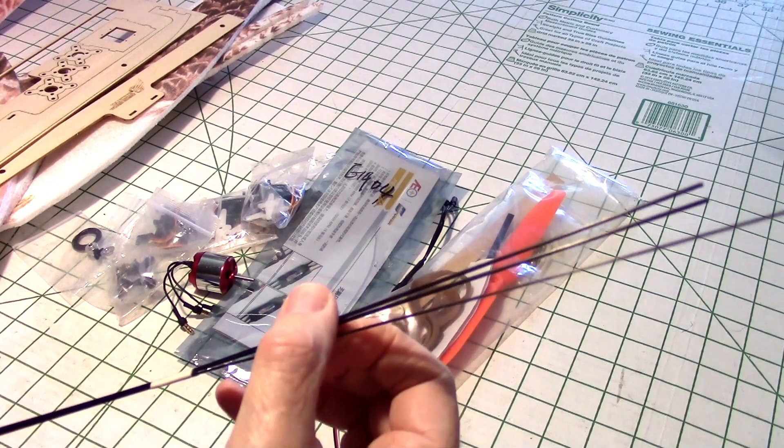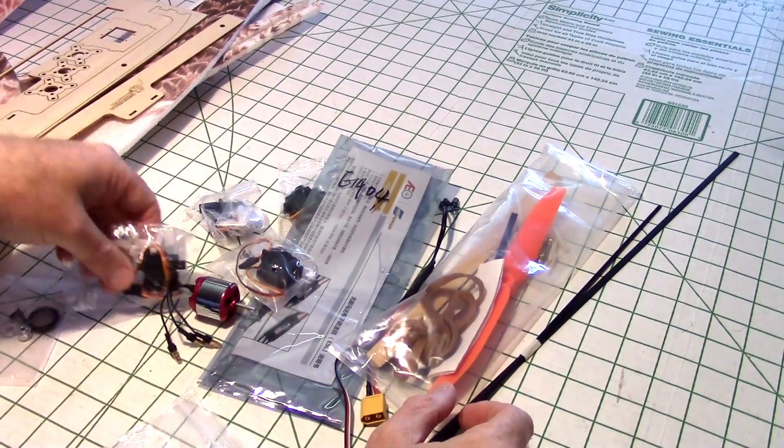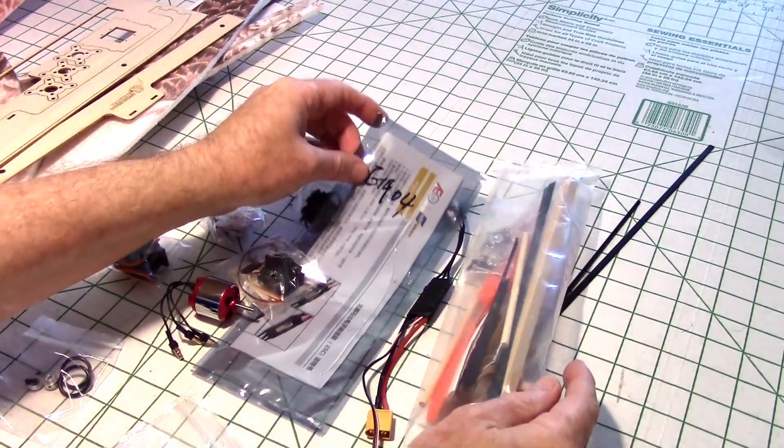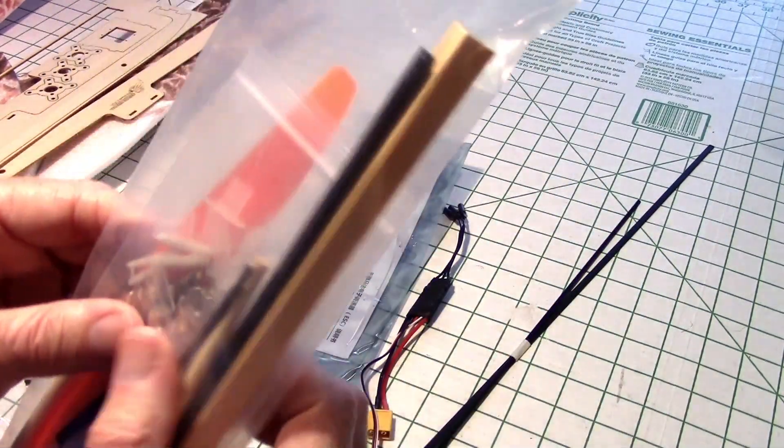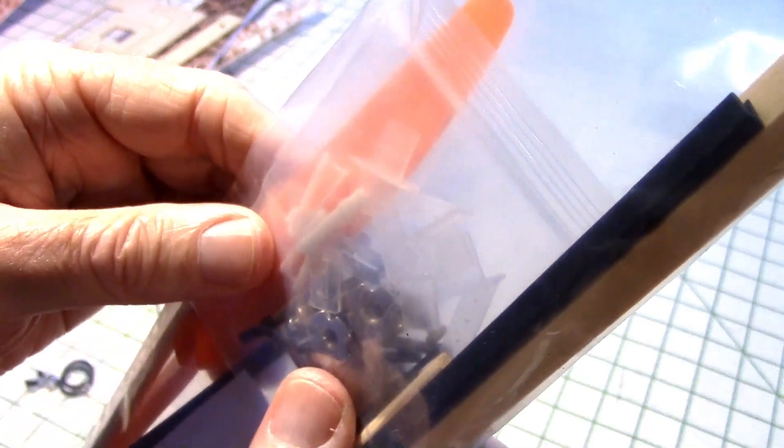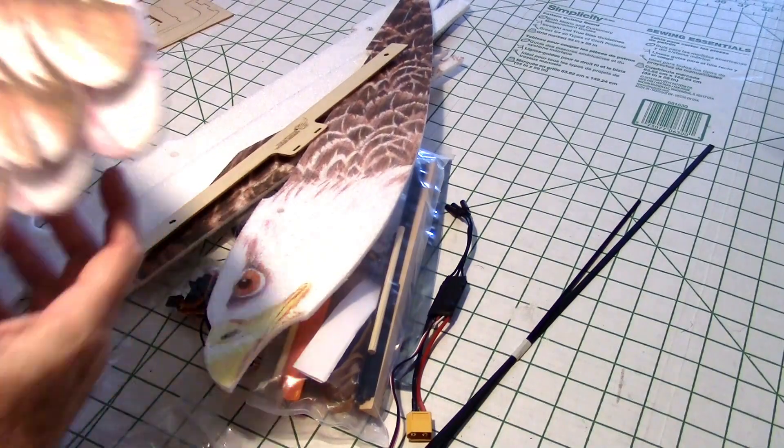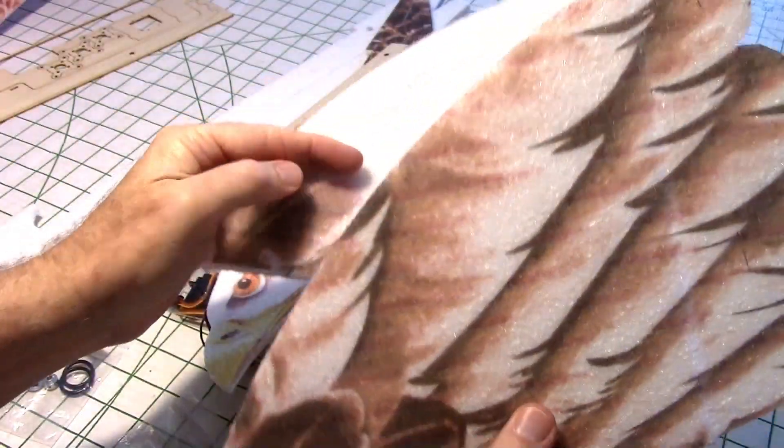Okay, finally we have the main wing spar right here and the control rods. I'm curious to see how they're going to use the, if there's any clevises or anything in here. Oh yeah, there they were in this pack, there's the clevises and they look like they just glue on the end of the carbon fiber rods, kind of like the last one did but it had metal. And of course we have the horns there, yeah, so everything looks like it's here.